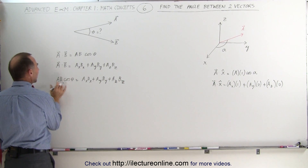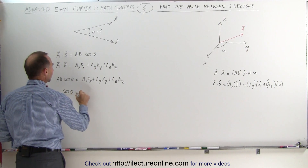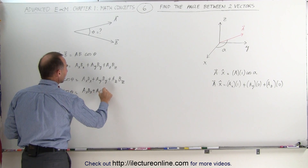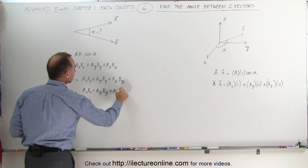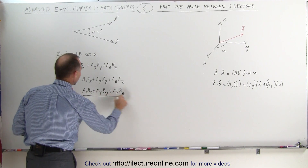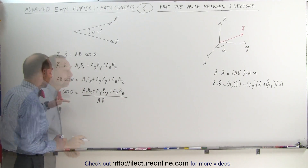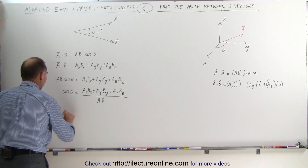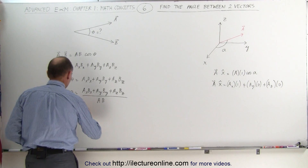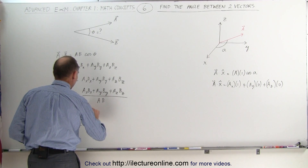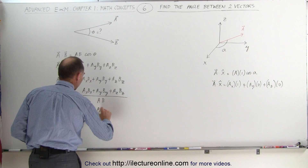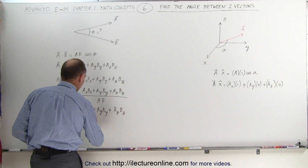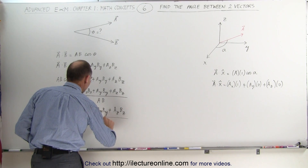Then if we divide both sides by |A||B|, we can say that the cosine of theta is equal to A_x·B_x + A_y·B_y + A_z·B_z, all divided by the magnitude of A times the magnitude of B. And finally, theta is equal to the arccosine of that ratio — the product of the x-components plus the product of the y-components plus the product of the z-components, all divided by |A| times |B|.